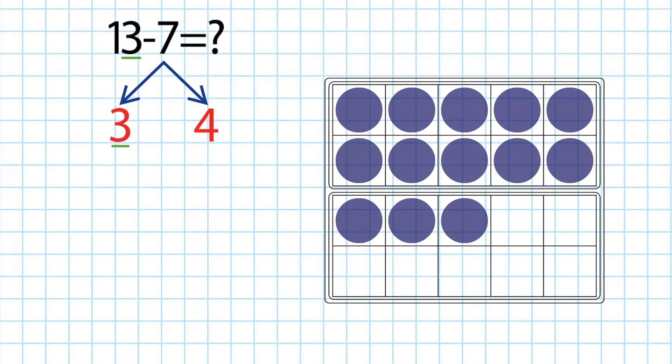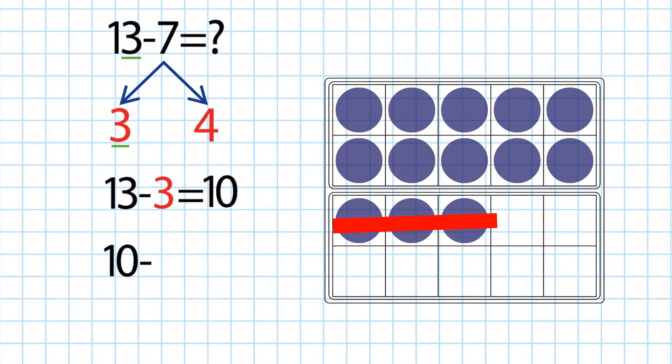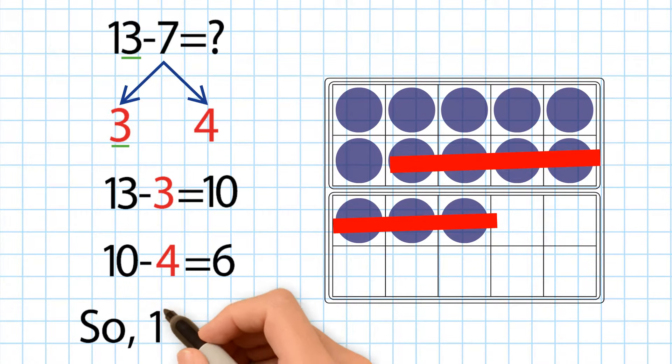Let's draw 13. First, we subtract 3 to make a 10. Next, we subtract 4 from 10 to make 6. So, 13 minus 7 is equal to 6.